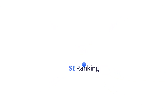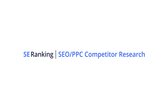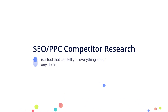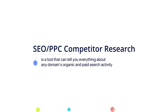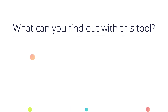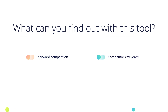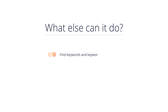In this video, we're going to take a close look at the SEO PPC competitor research tool. It is a tool that can tell you everything you need to know about both organic and paid search activities of any domain. It can help you find out who your organic and paid search keyword competitors are, what keywords they rank for, what keywords and ads they use in their paid campaigns now and in the past. On top of that, the tool can also help you find similar related long tail keywords and compare domain semantics to understand what keywords your website is missing.